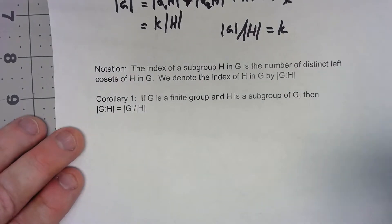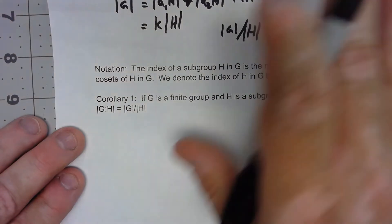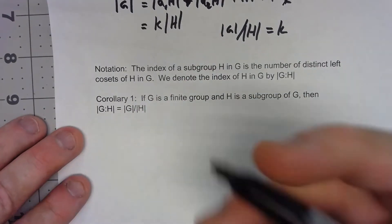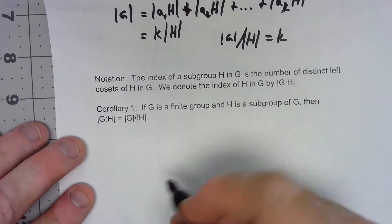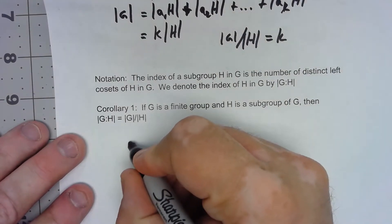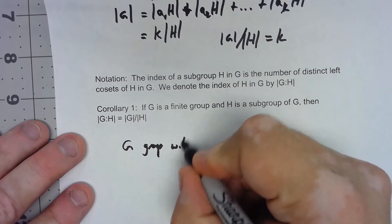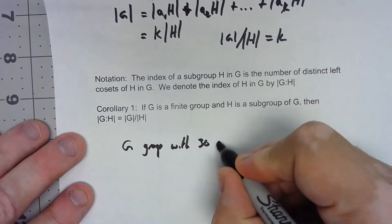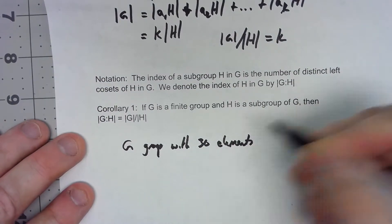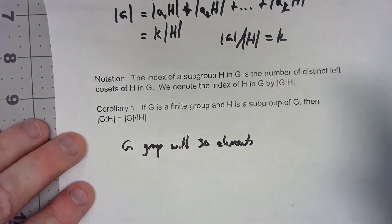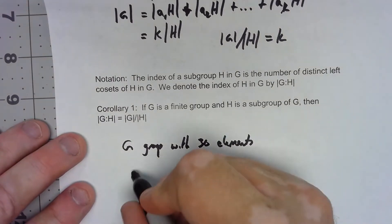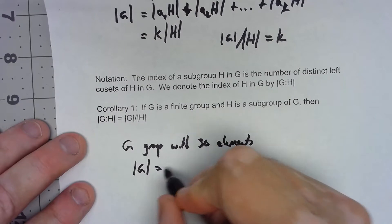Let's look at a very brief example of all this stuff here. Let's say we had G is a group with 30 elements. We don't know anything more than that. G is a group with 30 elements, the order of G is equal to 30.